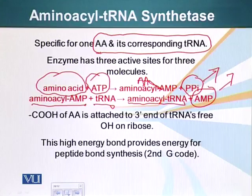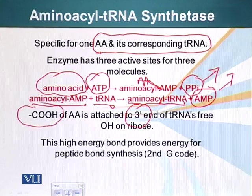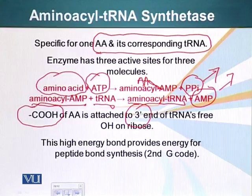The carboxy domain of the amino acid is attached to the 3' end of the tRNA — specifically, the hydroxyl group on the ribose. The 3' end of the tRNA is the hydroxyl group on the 3' carbon of the pentose sugar. We know amino acids have amino and carboxy domains, so a specific amino acid's carboxy domain is attached to the hydroxyl group at the 3' end of the tRNA.